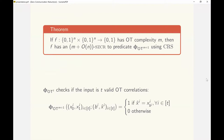...that uses common randomness and reduces the function to an M plus 1 OT support check predicate. This predicate checks if its inputs are in the support of M plus 1 OT correlations.